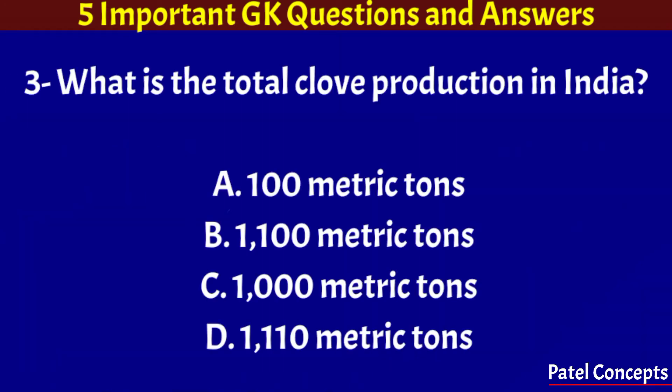What is the total clove production in India? 1,110 metric ton.